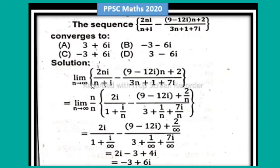first of all, limit n approaches to infinity 2ni divided by n+i minus (9-12i) into n+2 divided by 3n+1+7i, so take a common numerator and denominator n, so n into 2i divided by 1+i/n minus (9-12i) into plus 2/n divided by 3+1/n+7i/n,